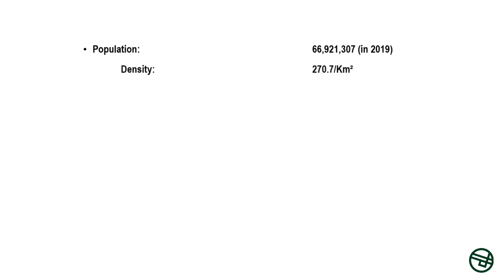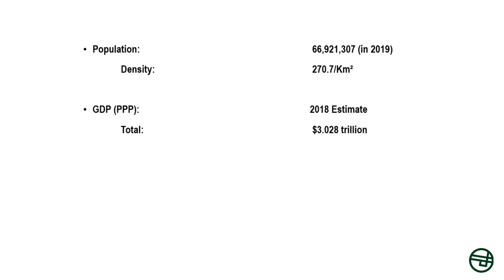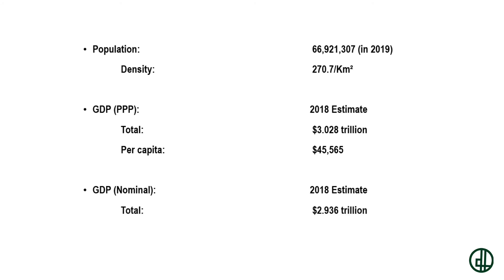Density: 270.7 per square kilometer. GDP PPP 2018 estimate — total: $3.028 trillion, per capita: $45,565. GDP nominal per capita: $44,177. Currency: Pound Sterling. Time zone: UTC, Greenwich Mean Time, WET.